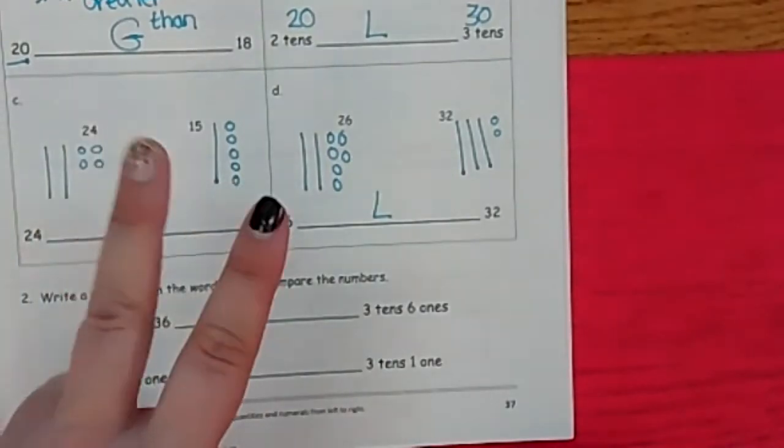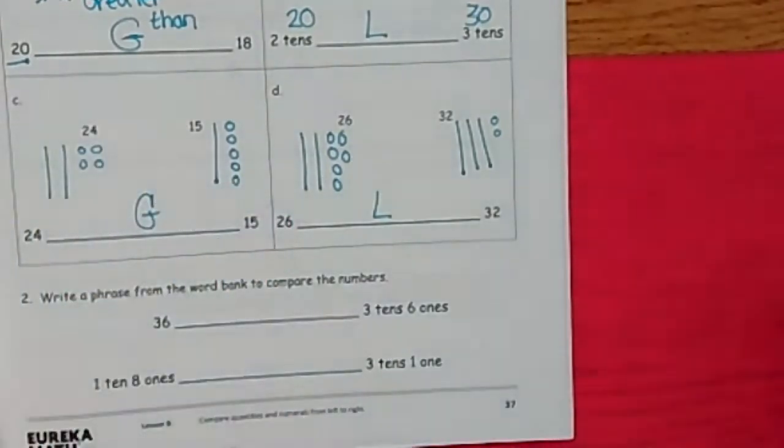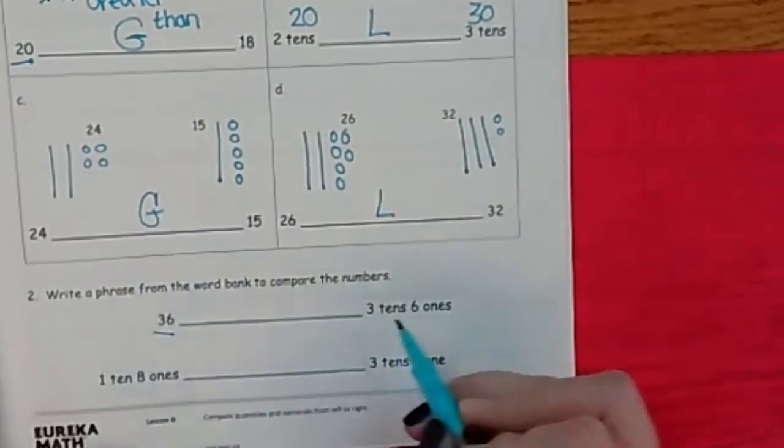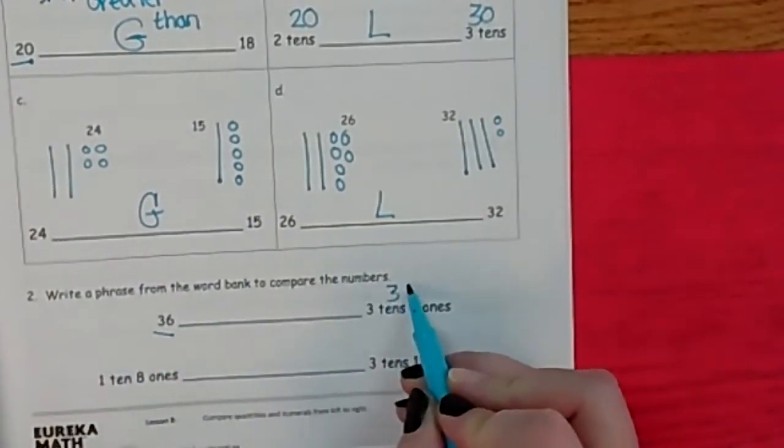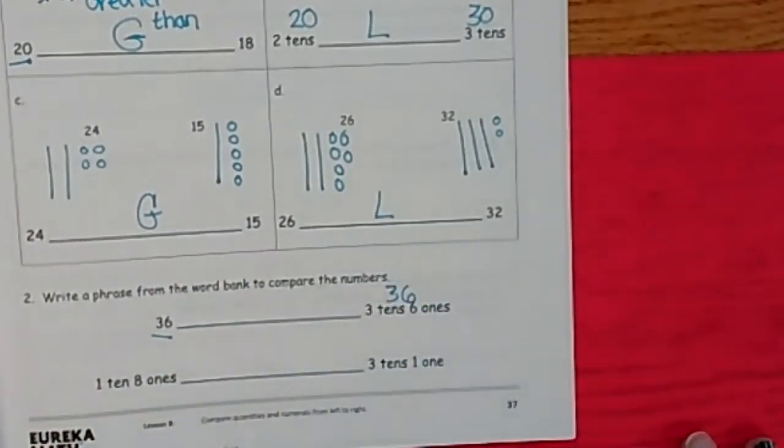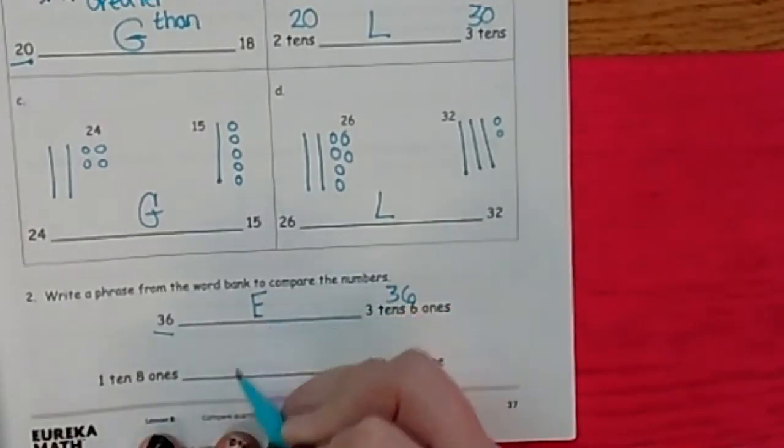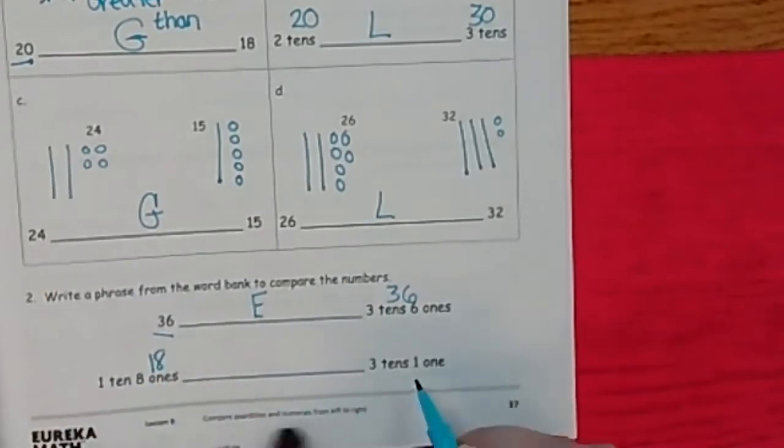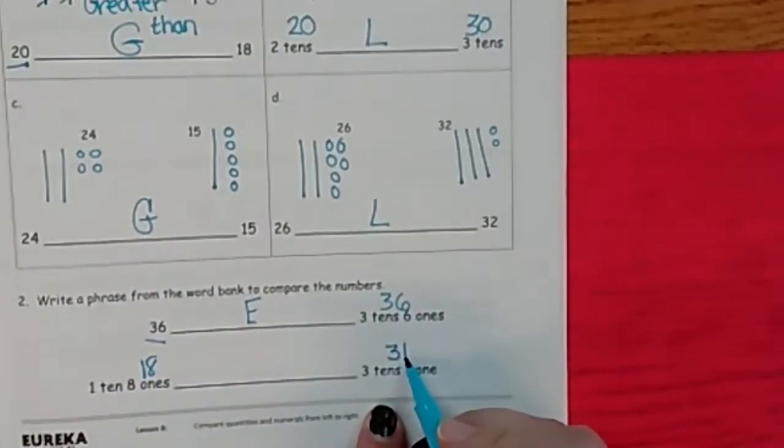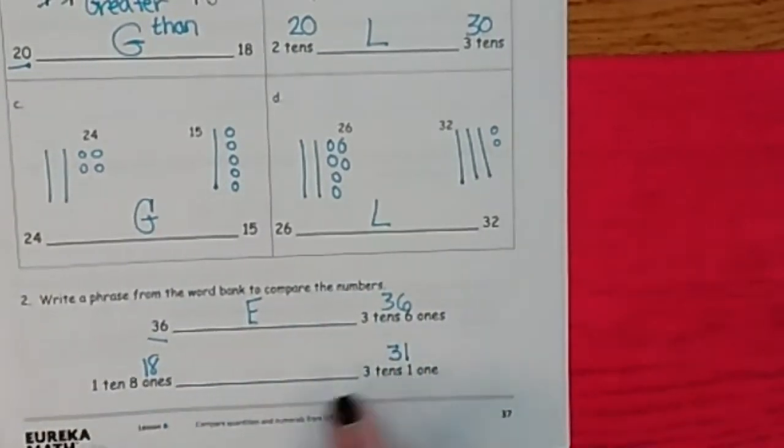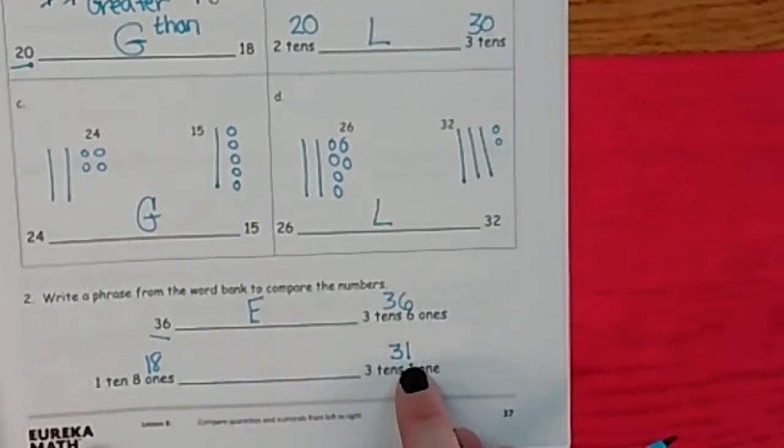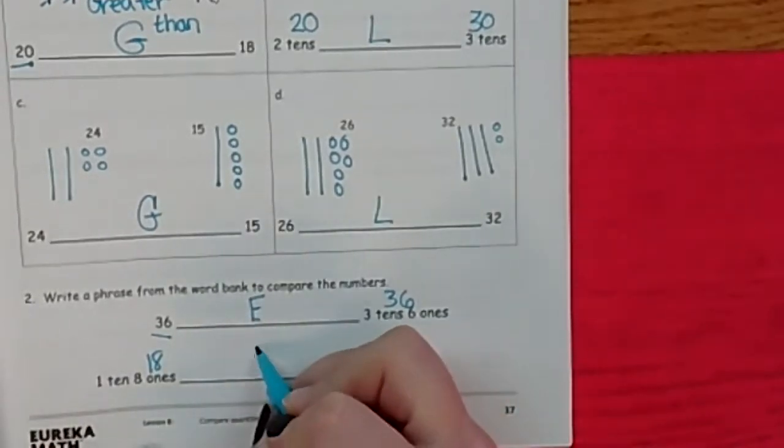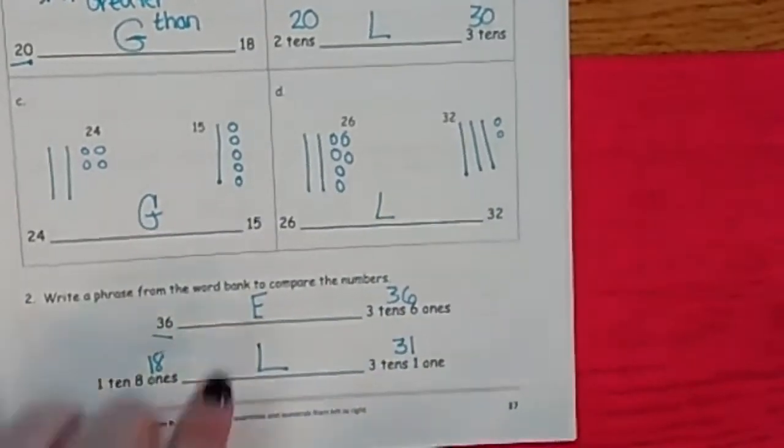Write the phrases on the line. So again, we're going to write G for greater than, L for less than, or an E if they're equal. 36 and 36. What? What's that word when they're the same? Yes, it's equal. So put a big letter E. Equal or for excellent first graders. Now I have one 10 and eight ones, 18. Or three tens and one, 18 or 31. 18 is blank 31. It's small. That's big. So it is lower, less than.